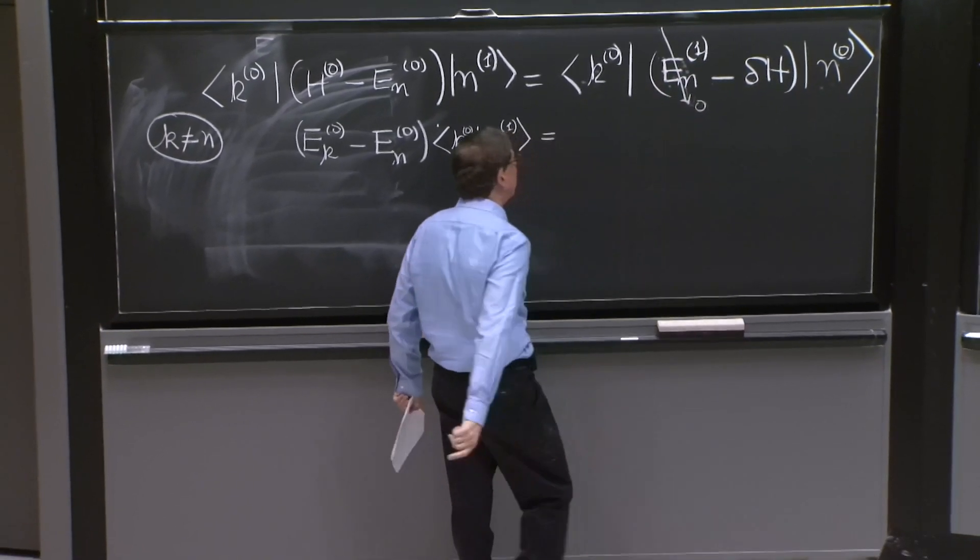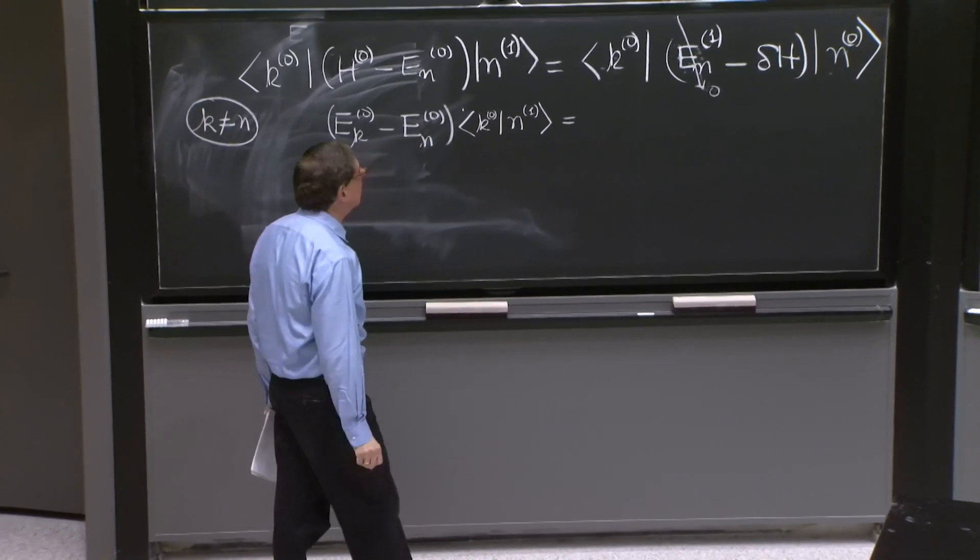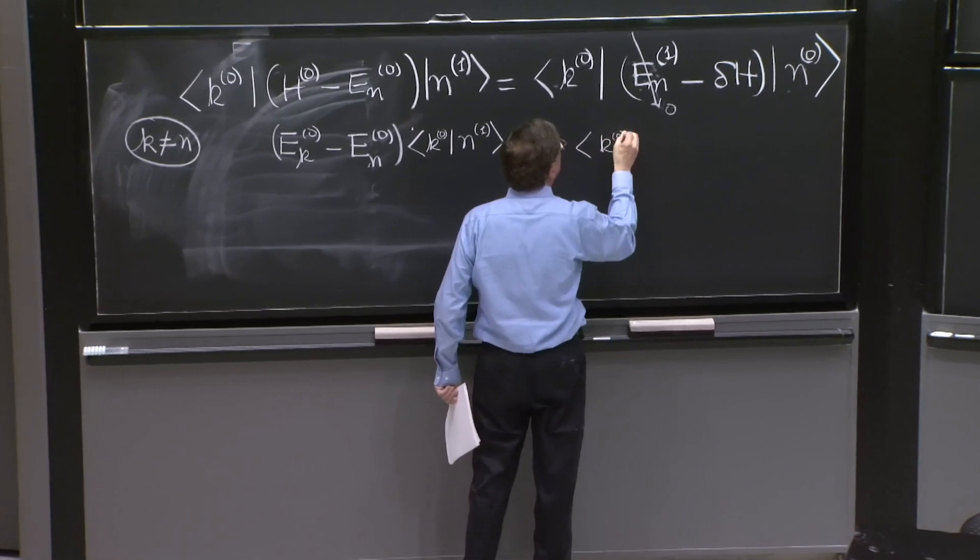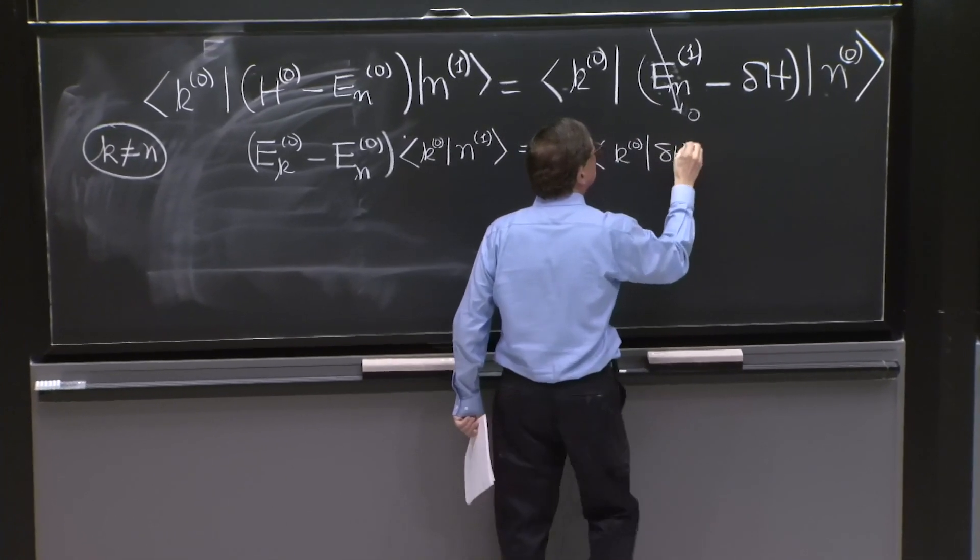not because this number is zero, but because the overlap is zero. And I get here minus k0 delta H n0.